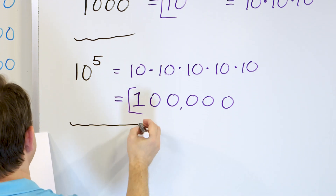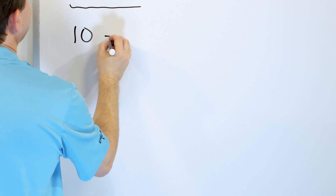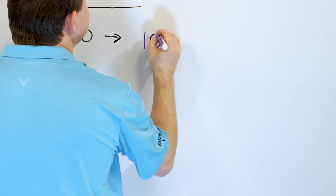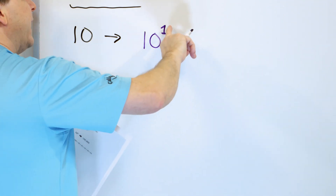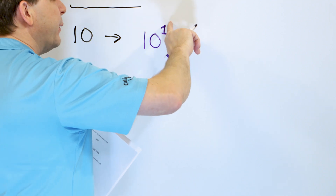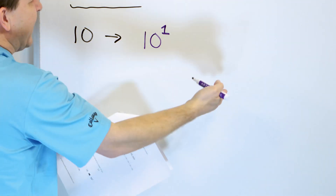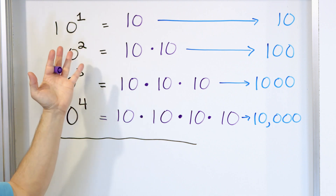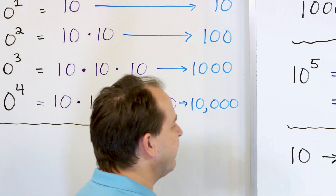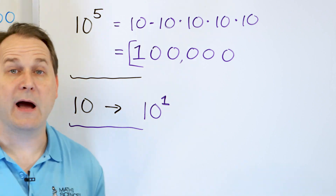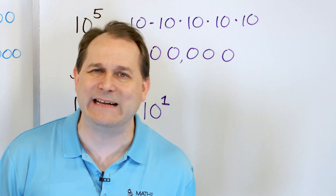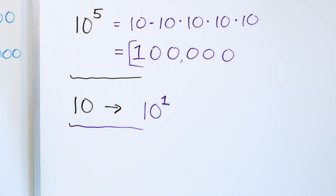Problem number three: convert the number 10 to a power of 10. The answer is just 10 to the power of 1. Remember, when you have a number raised to the exponent of 1, you're not really multiplying it by anything, so the answer is just 10 itself. Anything raised to the first power is just the number itself.